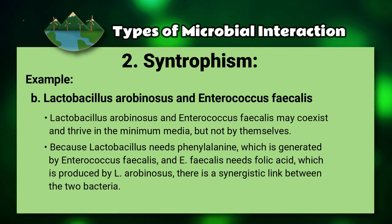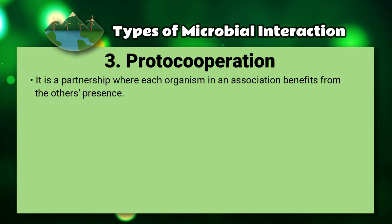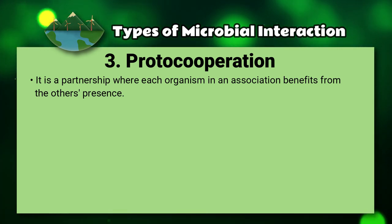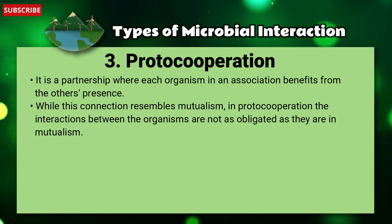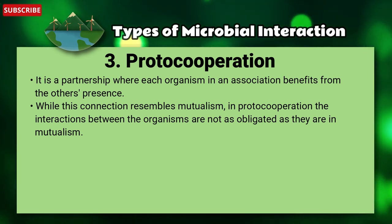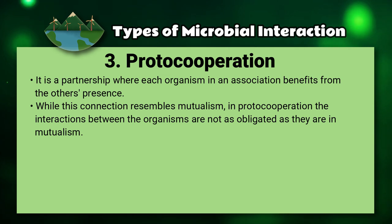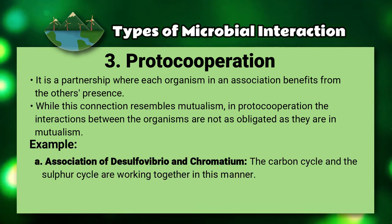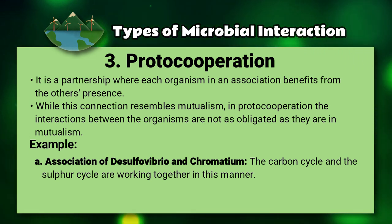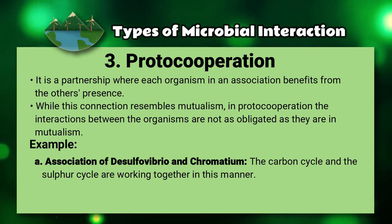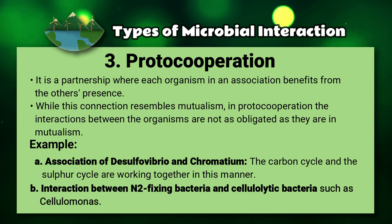Number three: proto-cooperation. It is a partnership where each organism in an association benefits from the other's presence. While this connection resembles mutualism, in proto-cooperation the interactions between organisms are not as obligatory as they are in mutualism. Examples include: first, the association of sulfur Vibrio and Chromatium, where the carbon cycle and sulfur cycle work together; second, the interaction between nitrogen-fixing bacteria and cellulolytic bacteria such as Cellulomonas.